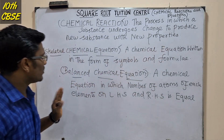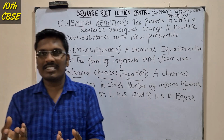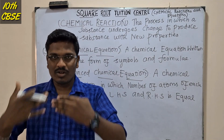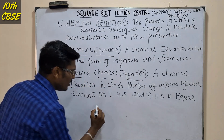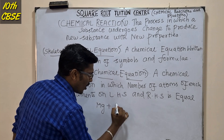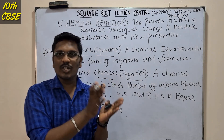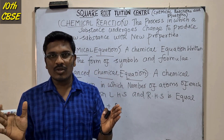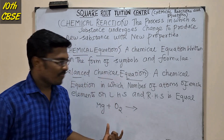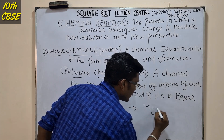Chemical reactions are written in the form of symbols and formulas. For example, we are going to talk about magnesium burnt in oxygen. So we have Mg — magnesium — burnt in oxygen, in the presence of oxygen. This is the reactant side, and on the product side we have MgO.